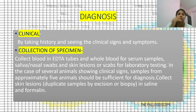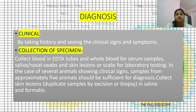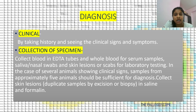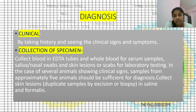Diagnosis: Clinical diagnosis is based on clinical signs and symptoms, along with taking the history, including any travel history. For confirmatory diagnosis, samples are collected — blood in EDTA tubes, saliva or nasal swabs, and skin lesions or stabs for laboratory testing. In cases of several animals showing clinical signs, samples from approximately five animals should be sufficient. Skin lesion samples are collected by excision or biopsy and preserved in saline and formalin.